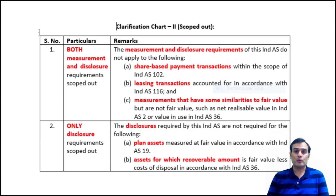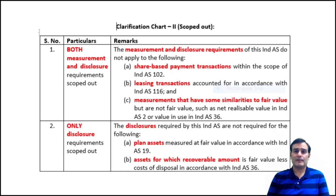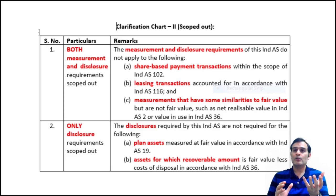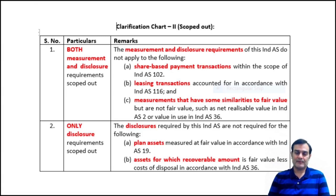The second area of scoped-out is where the measurement principles of Ind AS 113 are applicable but the disclosure requirements are not. These are typically two areas: one is Ind AS 19, which talks about plan assets being measured at fair value, and the second is calculations under Ind AS 36 with reference to fair value less cost of disposal. So to conclude, Ind AS 113 gives you the framework for computation — not the triggering point. When to compute is determined by the other Ind AS standards. Stay tuned for more videos on Ind AS 113.